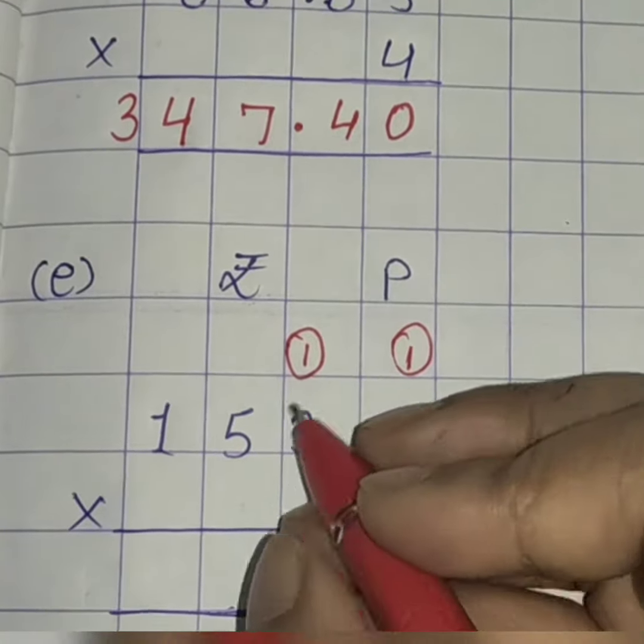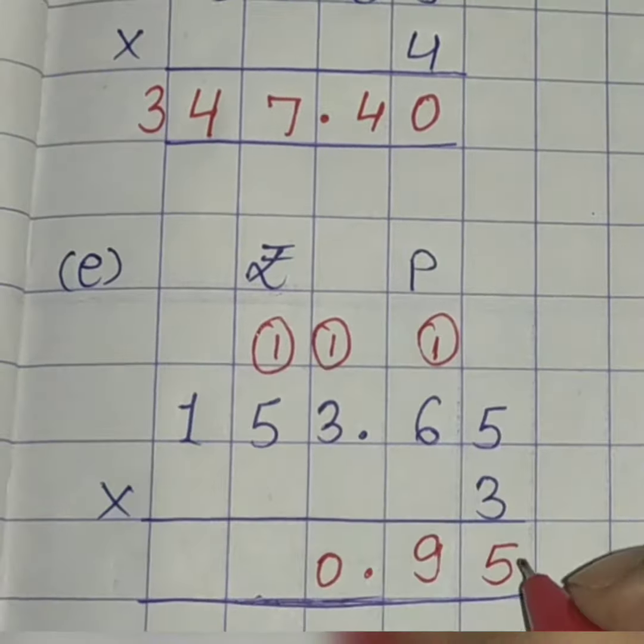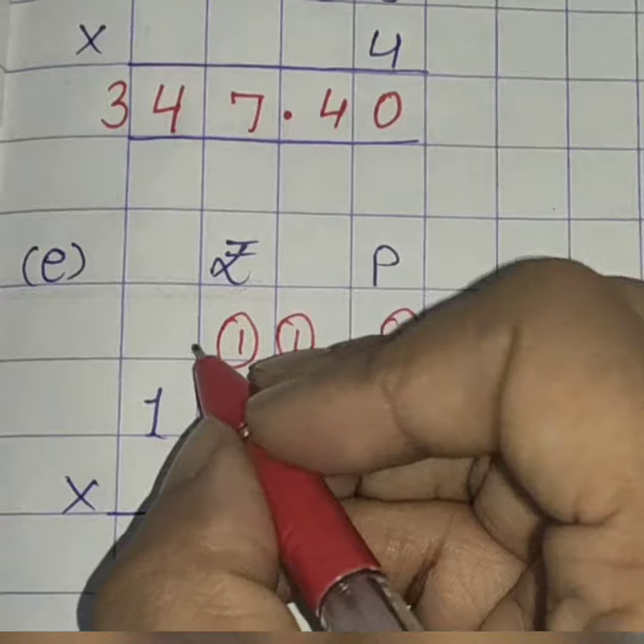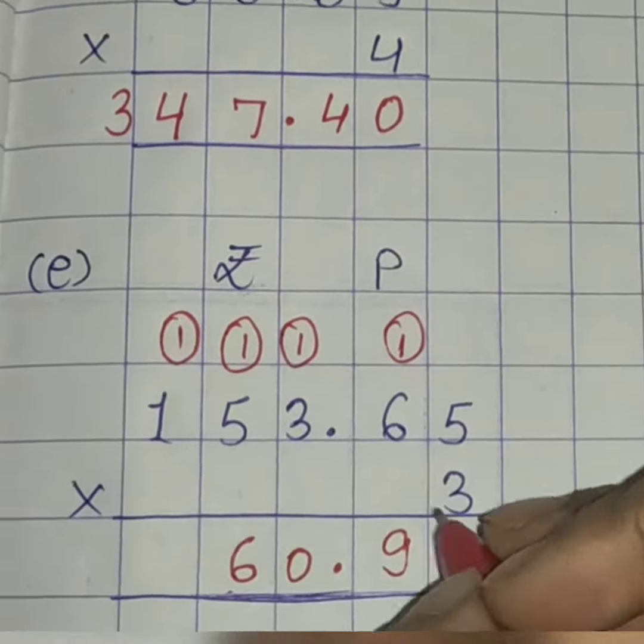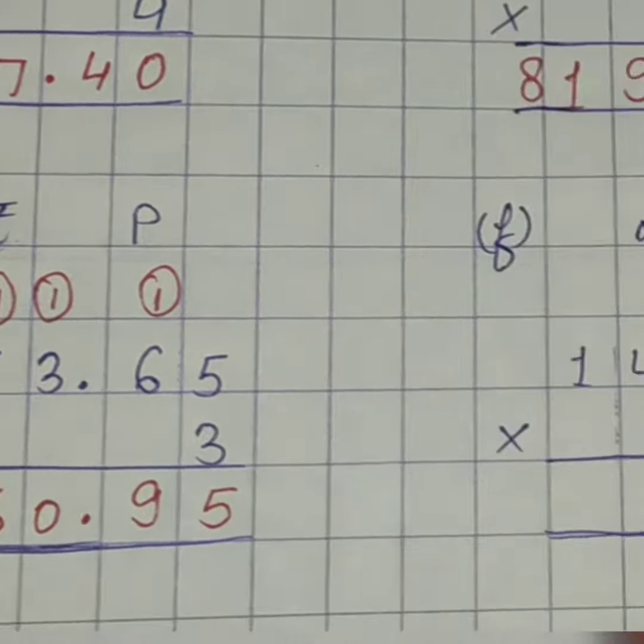Dot over here. 3, 3's are 9. 9 plus 1, 10. 0 here, 1 as a carryover. 3, 5's are 15. 15 plus 1, 16. 6 here, 1 as a carryover. 3, 1's are 3. 3 plus 1, 4. So, the answer is 460 rupees, 95 paise.